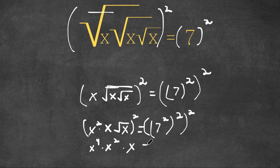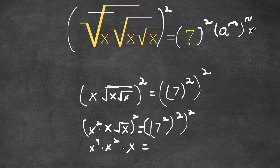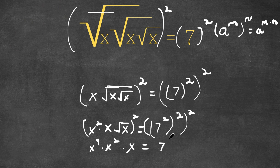Now this is equal to — if we have something in the form a to the power of m to the power of n, this equals a to the power of m times n. So as you can see here, we have 7 to the power of 2 to the power of 2 to the power of 2, which equals 7 to the power of 2 times 2 times 2. And 2 times 2 is 4, 4 times 2 is 8, so this would be 7 to the power of 8.